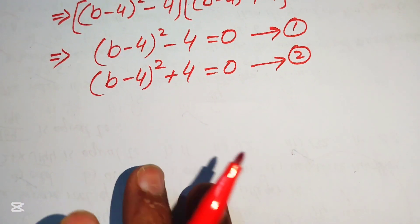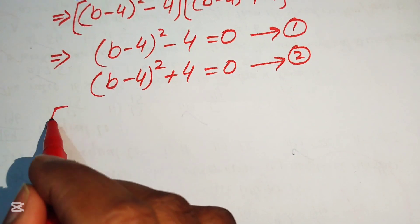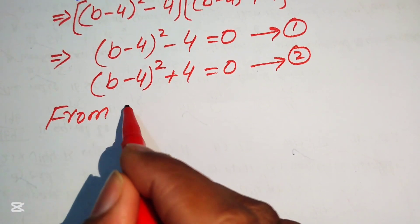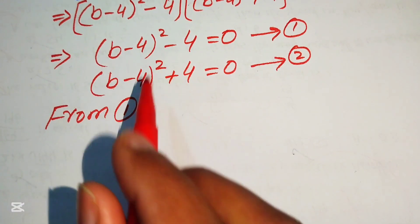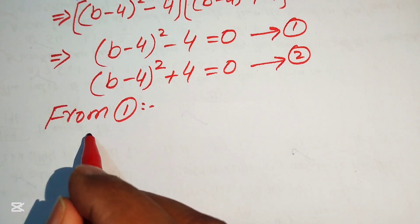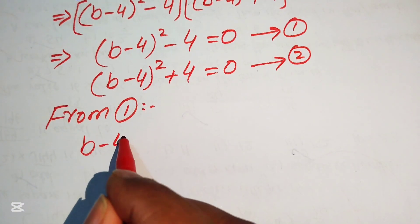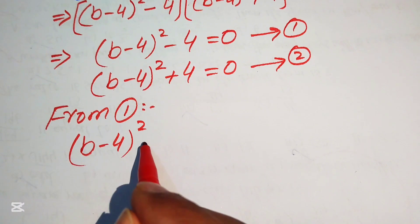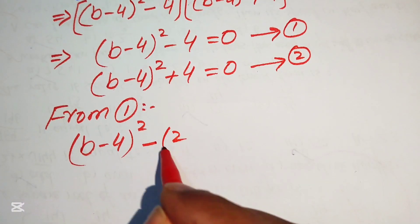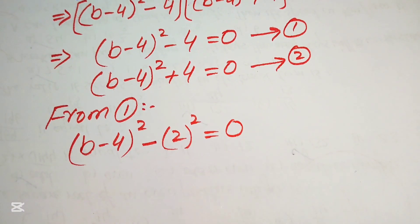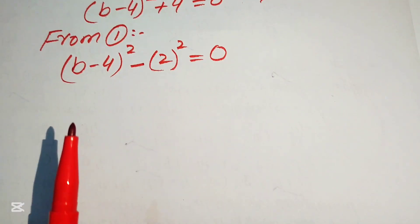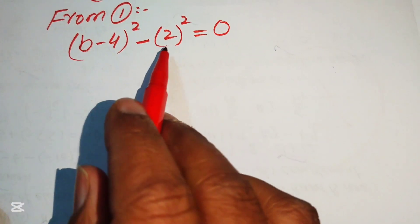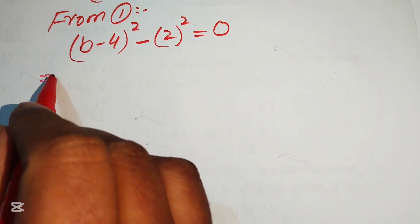Now we solve equation number 1. From equation 1 we have (b minus 4) squared minus 4 equals 0. We rewrite (b minus 4) squared minus 4 as (b minus 4) squared minus 2 squared equals 0, and we apply the difference of squares identity again.